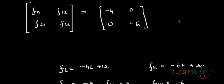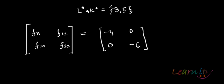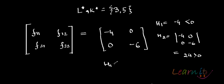You'll calculate the principal minors. H1 is minus 4, which is negative. H2 is the determinant of minus 4, 0, 0, minus 6, which is equal to 24, which is positive. So if your H1 is negative and H2 is positive, then the point which you have calculated is indeed the point of maxima. So the second order conditions are satisfied.